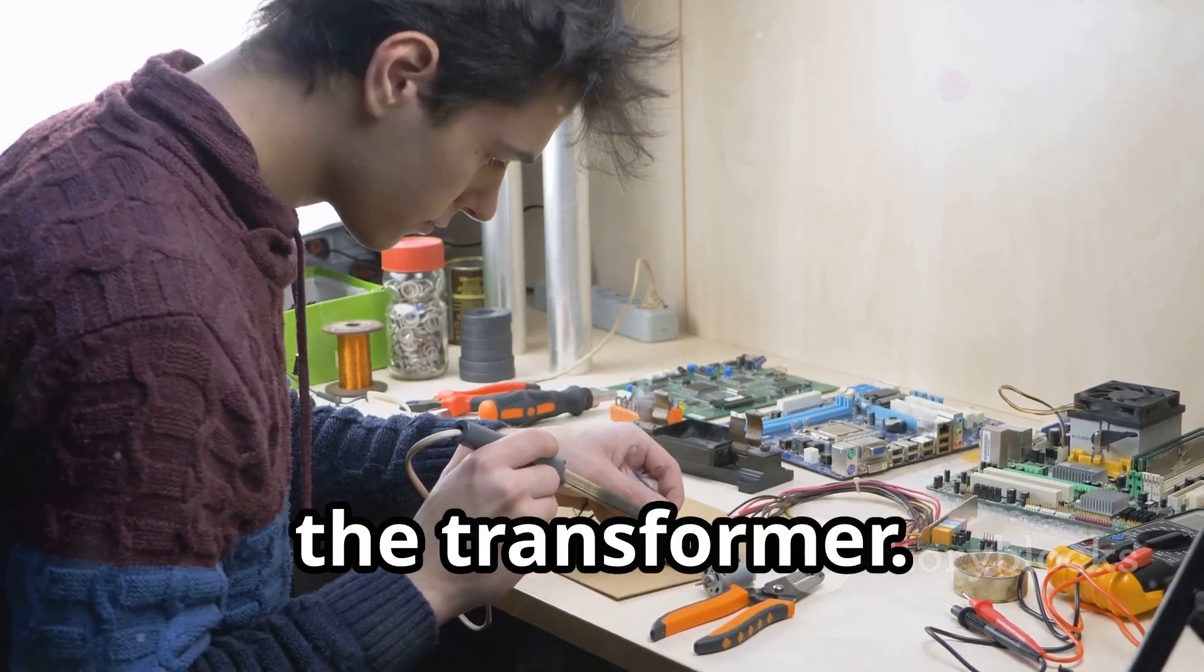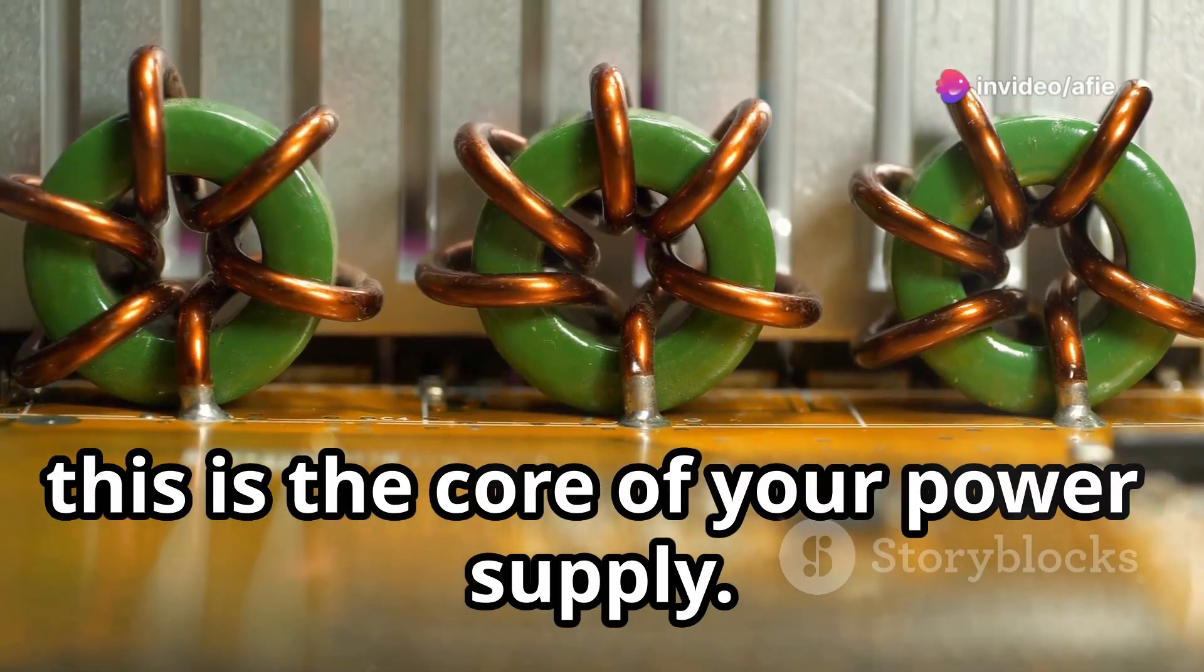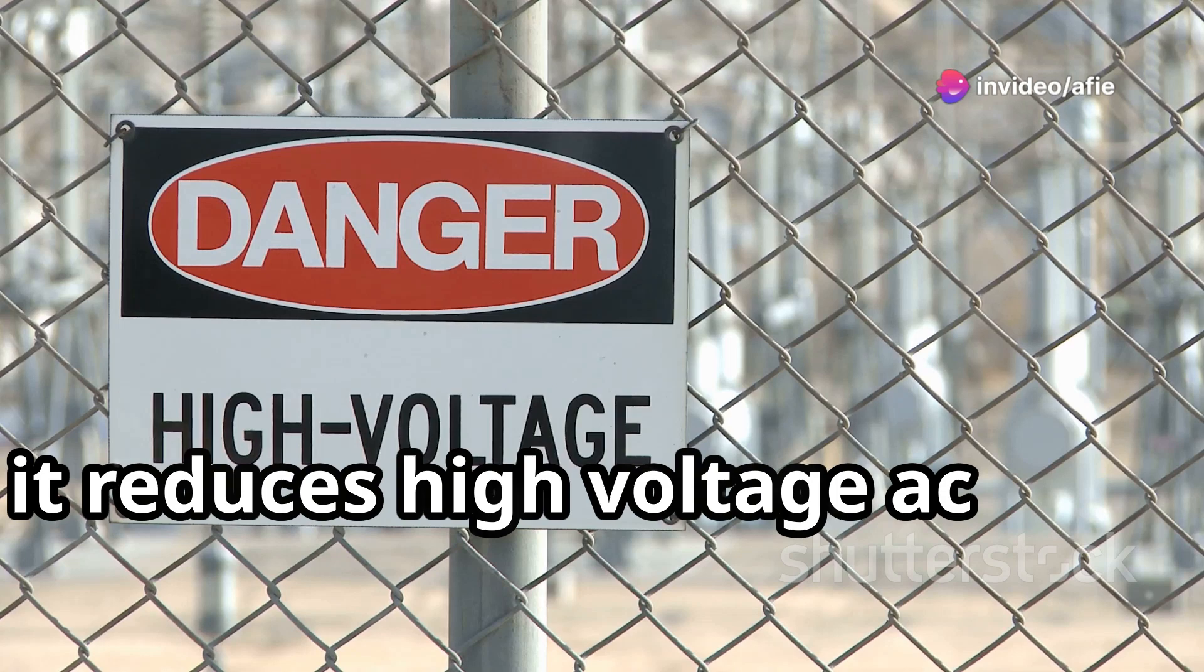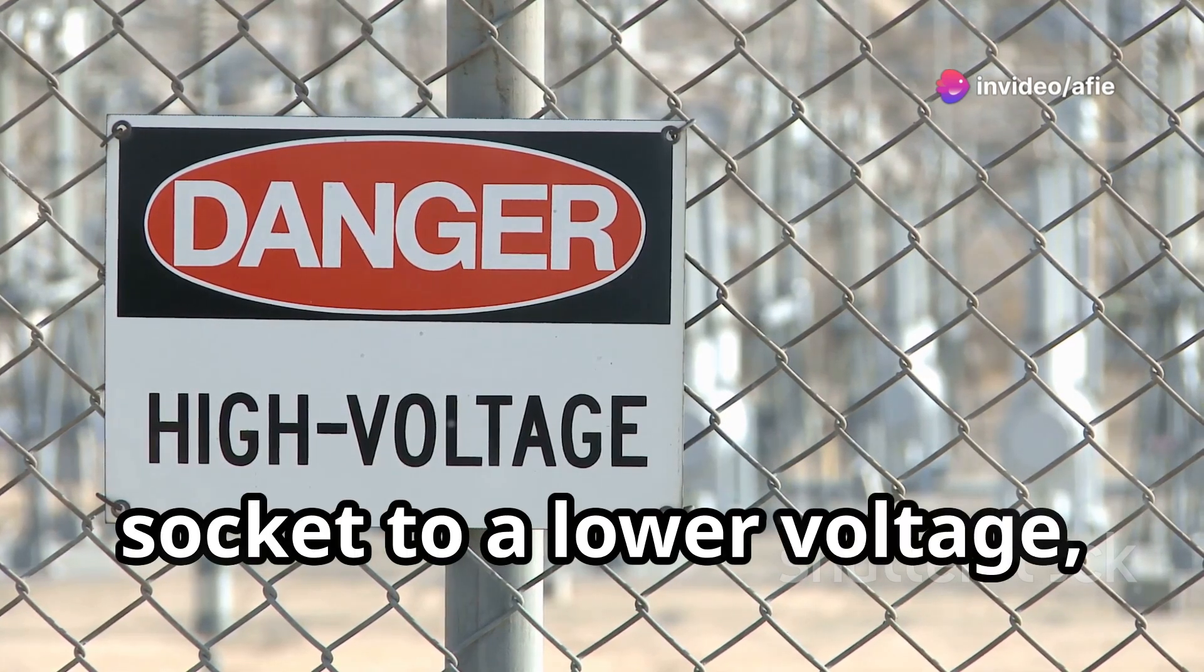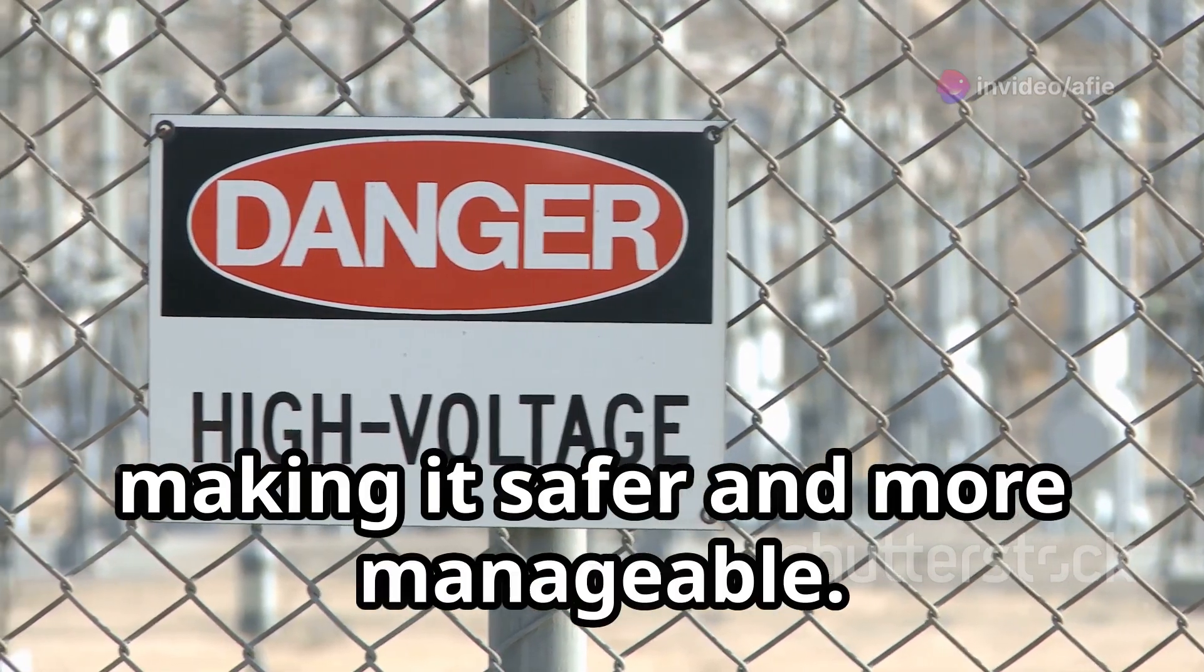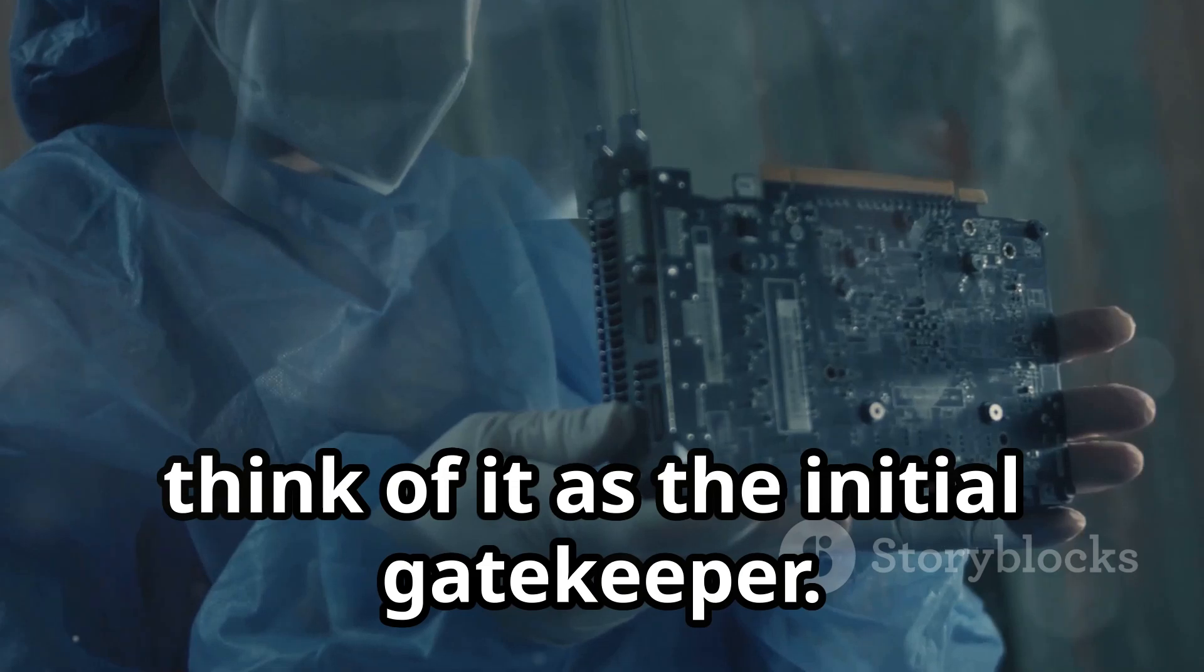First, the transformer. This is the core of your power supply. It reduces high voltage AC from your wall socket to a lower voltage, making it safer and more manageable. Think of it as the initial gatekeeper.